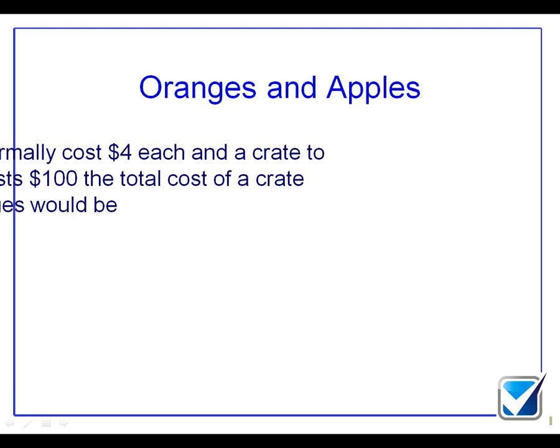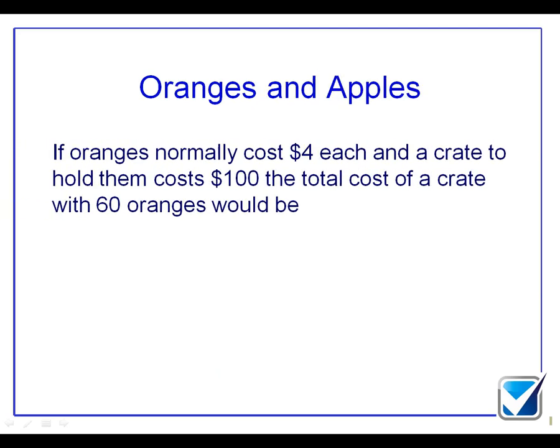Now, once again, we're using oranges and apples as our illustration. So we've got a situation with oranges. Oranges normally cost $4 each and a crate to hold them will cost $100. The total cost of a crate with 60 oranges is now going to be fixed costs plus all of my variable costs. So 60 by 4 gives me $240 plus the extra 100 gives me a total of $340.